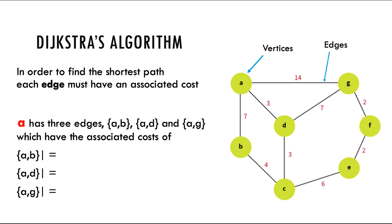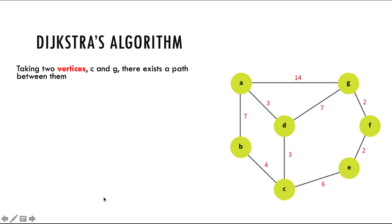Looking at A, it has three edges: A to B, A to D, and A to G. The A to B associated cost is 7 as denoted by the graph. A to D has a cost of 3, and A to G has a cost of 14. As we move through the shortest path algorithm, we add up the associated costs until we get to the destination that we're looking for.